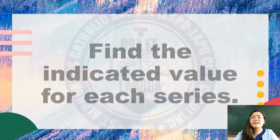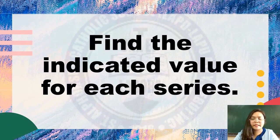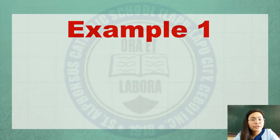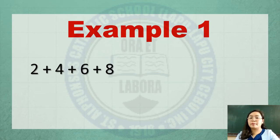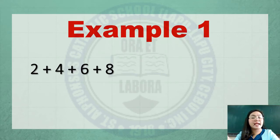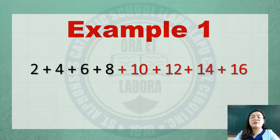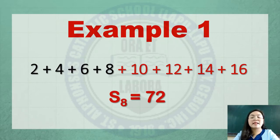Now let's find the indicated value for each series. Example number 1: 2 plus 4 plus 6 plus 8 and so on, S sub 8. First, look for a pattern to identify the other terms until the 8th term. We are given already the 4 terms: 2, 4, 6, 8. You need to look for the other 4 terms, which are 10, 12, 14, and 16. Then express the terms as the sum. So S sub 8 equals 72.